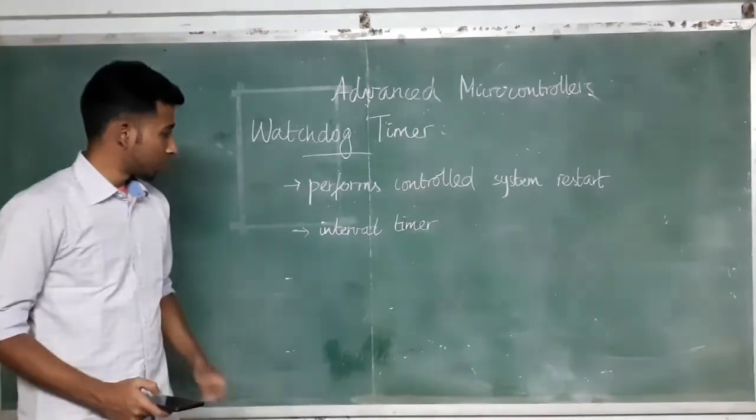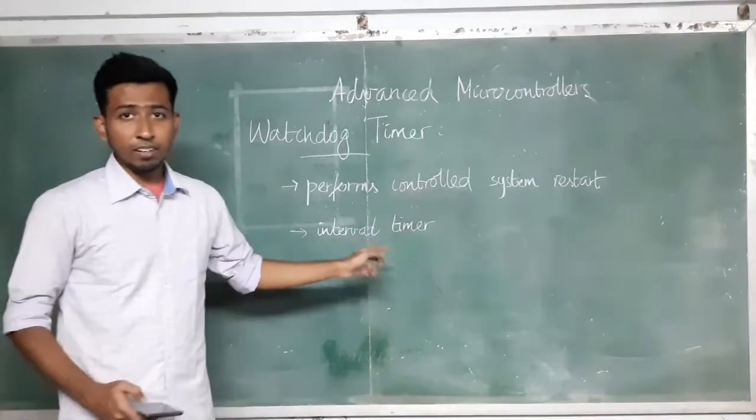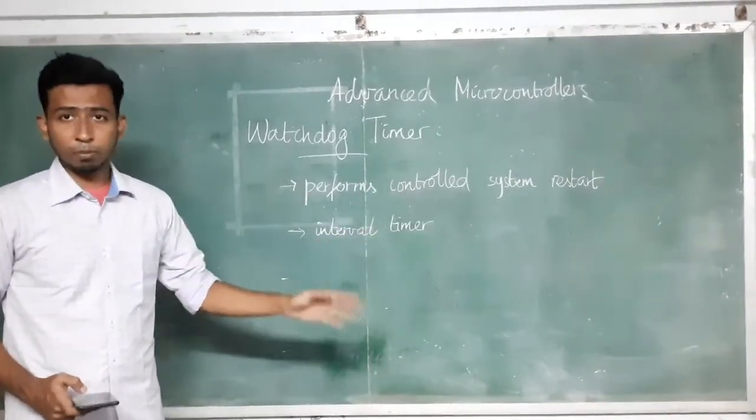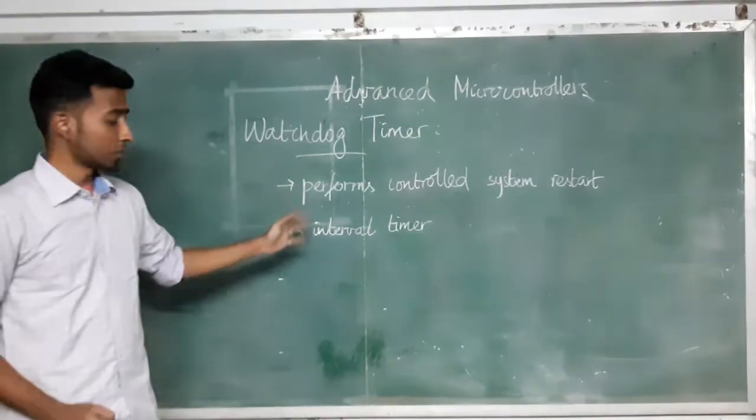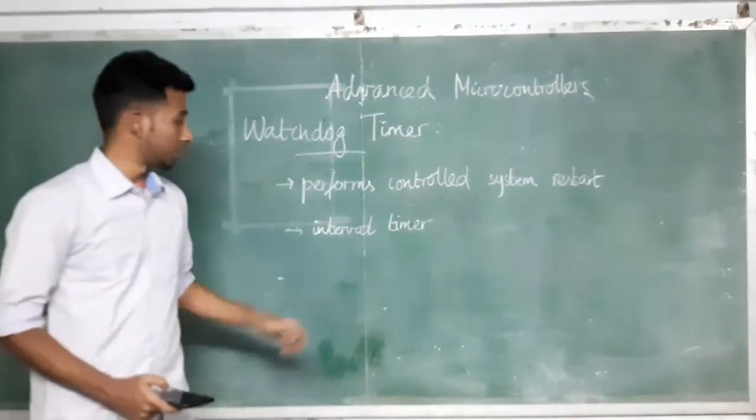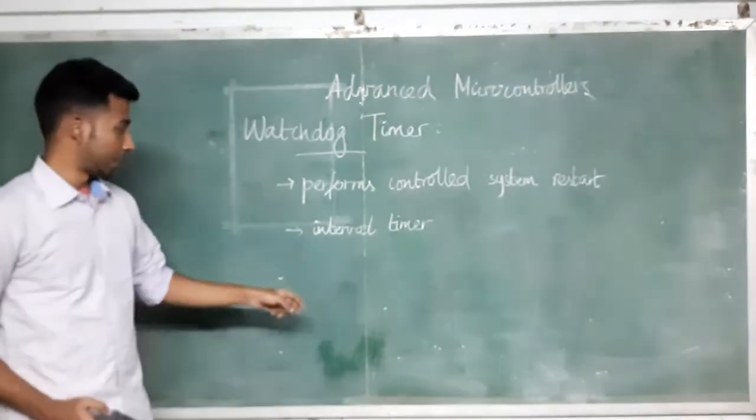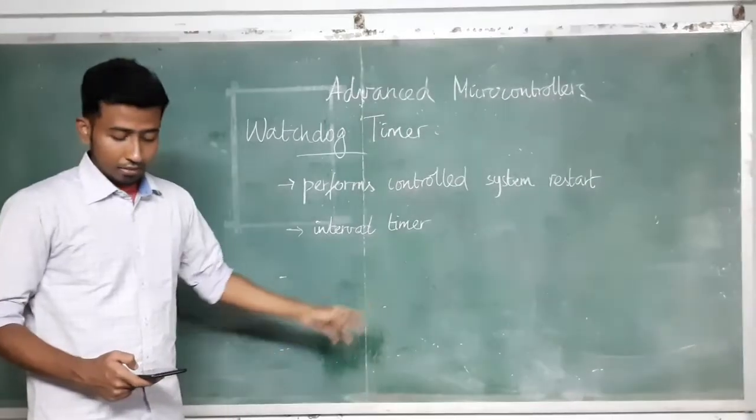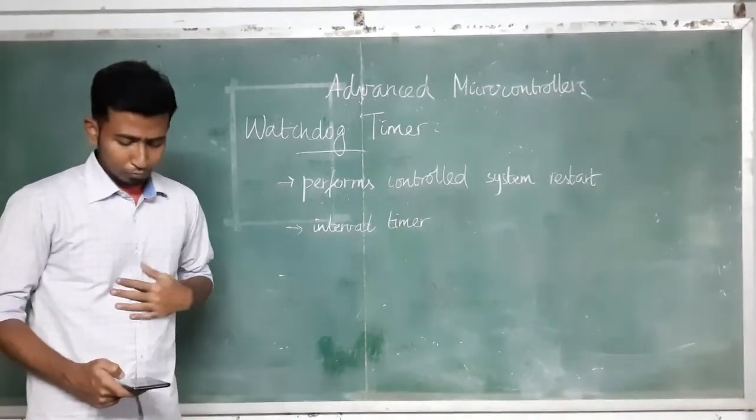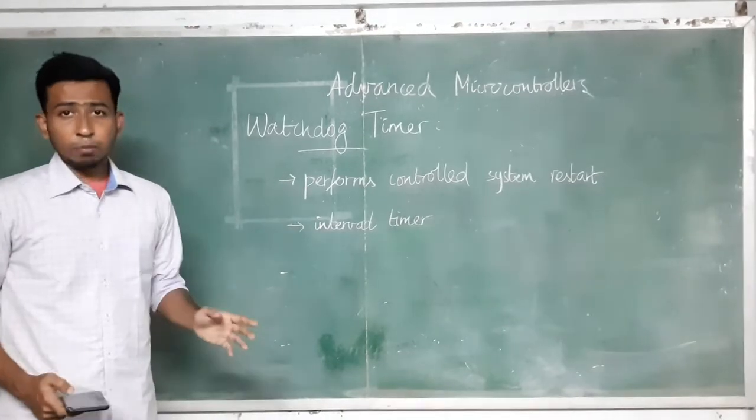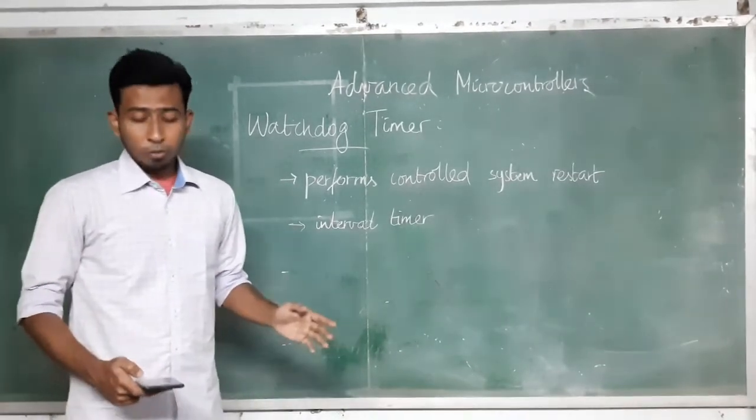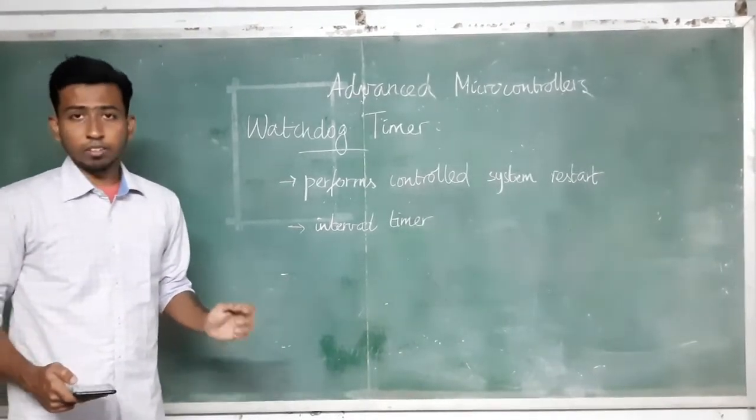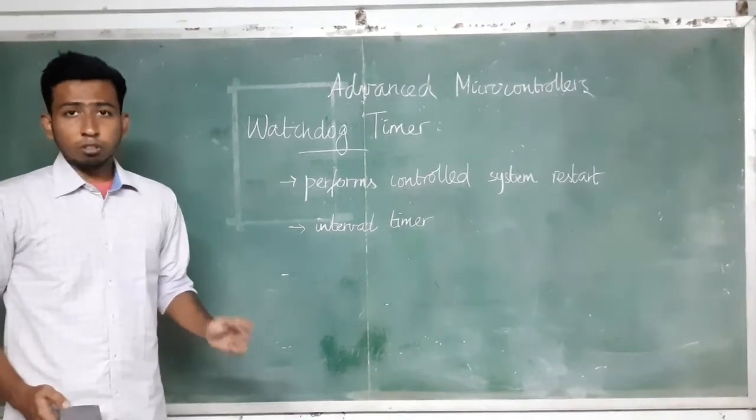It can also be configured as an interval timer that can interrupt at selected time intervals. The features of the watchdog timer include: it can work in watchdog mode or as an interval timer, there are 8 software selectable time intervals, there is selectable clock source and password protected access to the watchdog timer control register, and it can be stopped to conserve power.